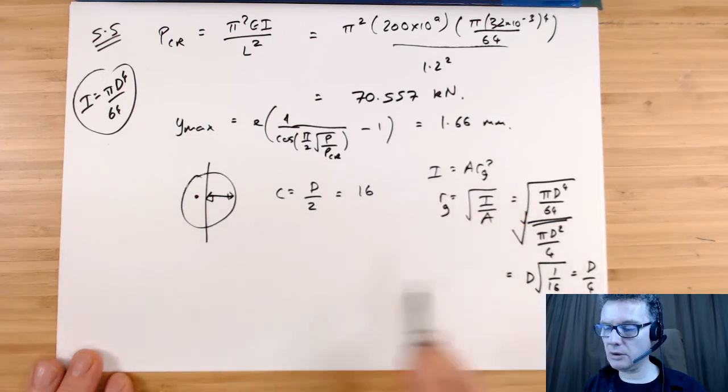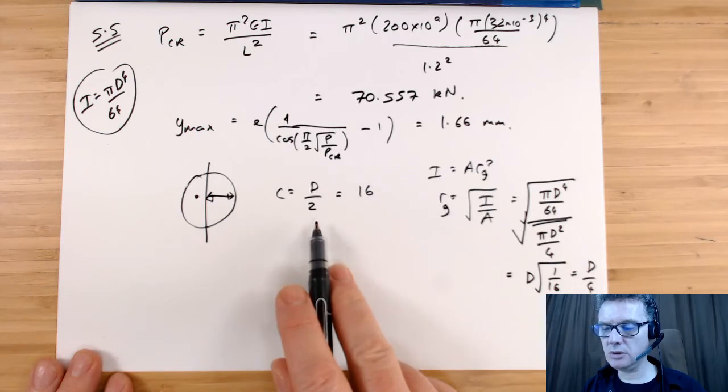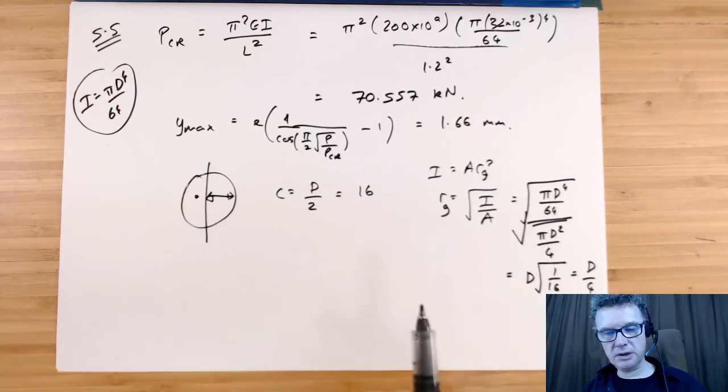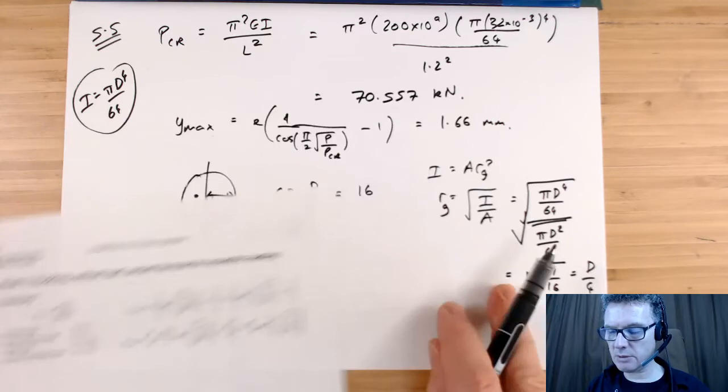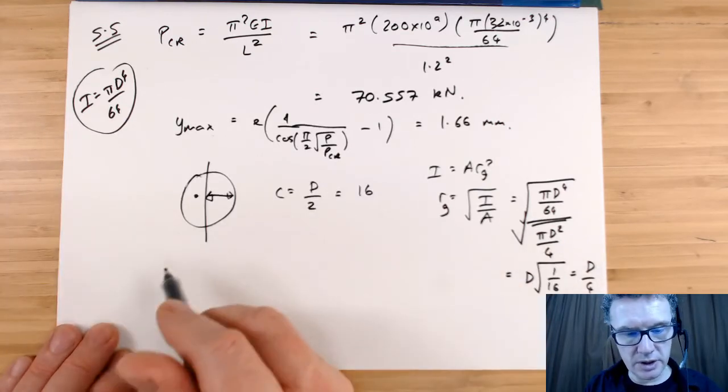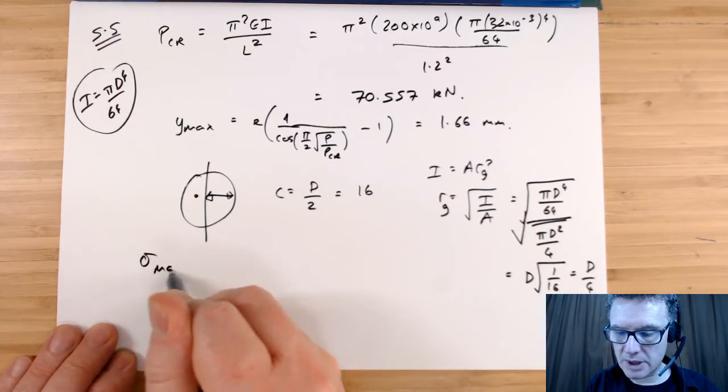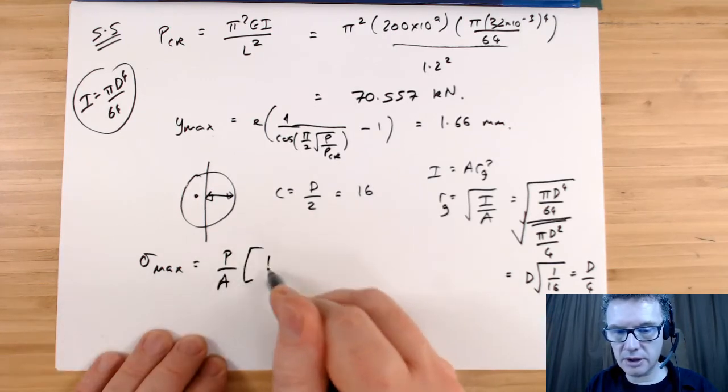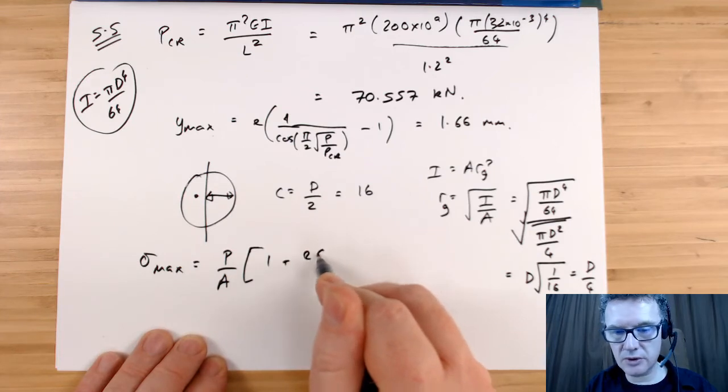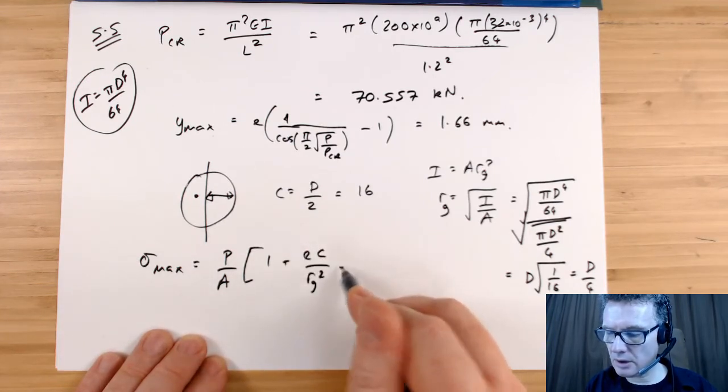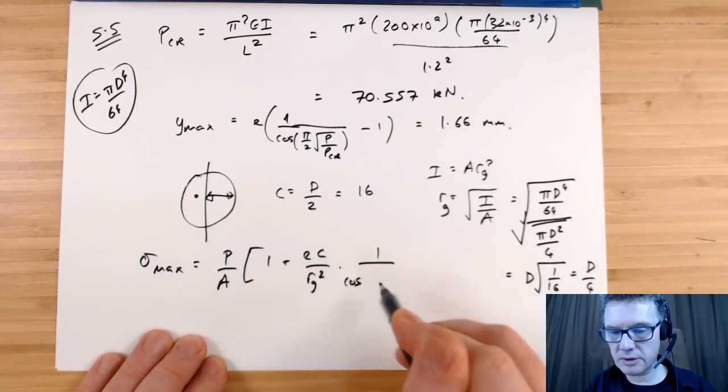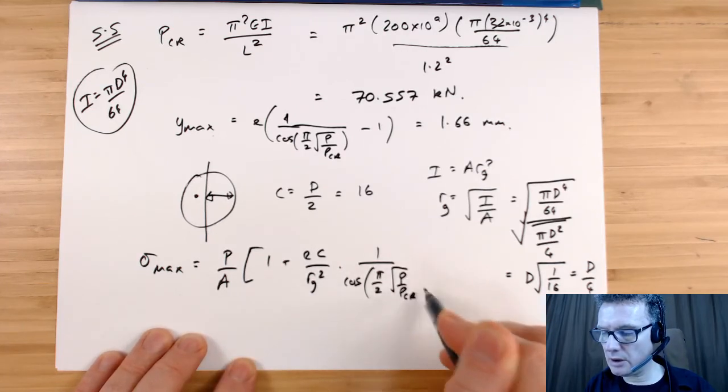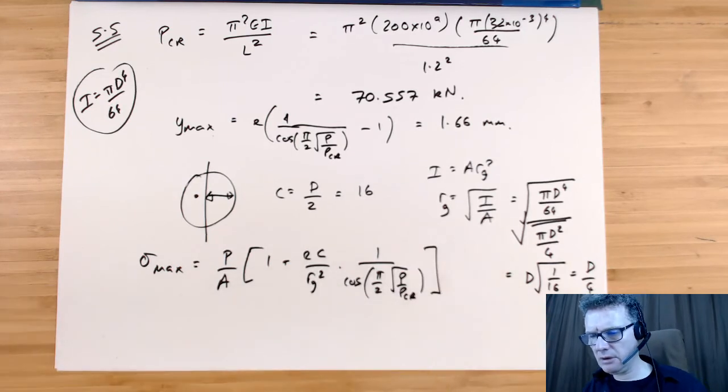The C's going to be D/2, and the e is specified as 1.2 millimeters. So let's use the formula to find the maximum stress. That's going to be stress_max equals load over area, open your bracket, 1 plus (e × C)/Rg² multiplied by 1/cos(π/2 × √(P/Pcr)), close bracket, close bracket.